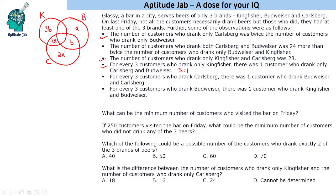For every three customers who drank Karlsberg, there was one who drank Budweiser and Karlsberg. Similarly, for every three customers who drank Budweiser, there was one who drank Kingfisher and Budweiser. Let us assign variables C and D. From statement 2: both Karlsberg and Budweiser is B plus D, and that equals 2C plus 24. So our first equation is B + D = 2C + 24.